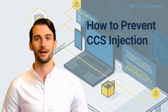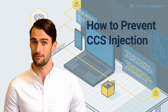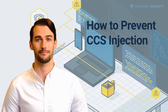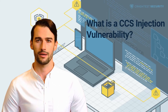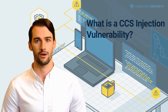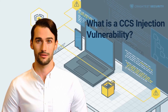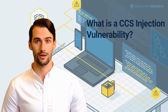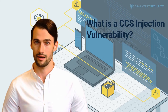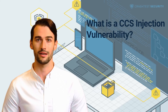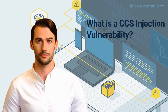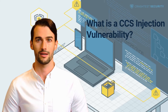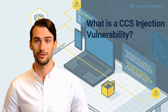The ChangeCipherSpec CCS injection vulnerability affects certain versions of OpenSSL. The CCS injection vulnerability is an OpenSSL vulnerability that was discovered in 2014. It affects OpenSSL versions 1.0.0 and 1.0.1 and is not an SSL or TLS specification issue. The vulnerability affects the ChangeCipherSpec request message in these older OpenSSL versions and opens the door for a man-in-the-middle attack.